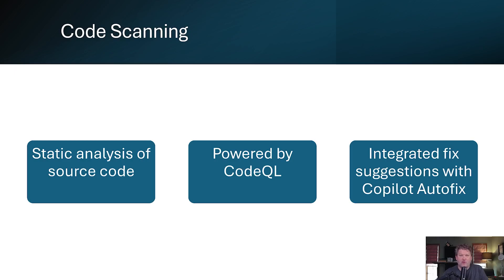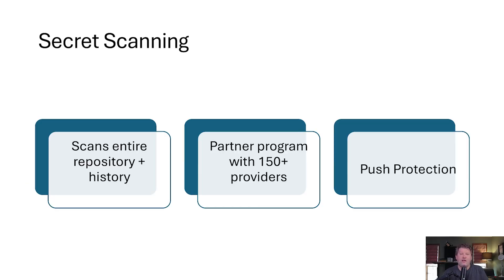Code scanning can be configured to run in a variety of different conditions, such as on events like pushes and pull requests. When it finds potential issues, it creates alerts directly in your repository, which are visible through the security tab. And the best part: it integrates with GitHub Copilot autofix, which can automatically suggest fixes for the vulnerabilities that it finds.